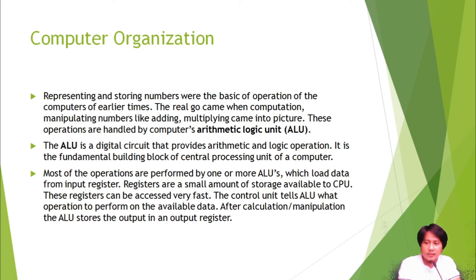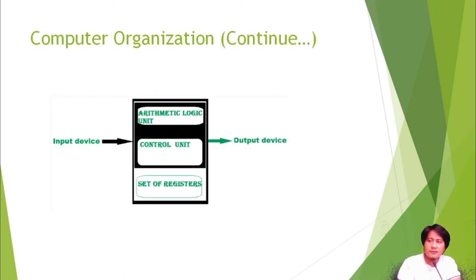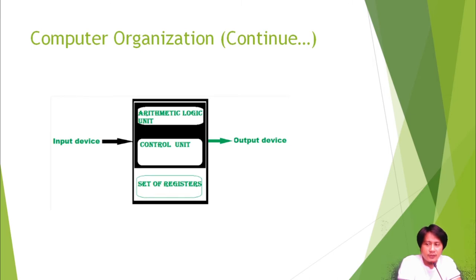The control unit tells the ALU what operation to perform on the available data, and after calculation or manipulation, the ALU stores the output in an output register. Looking at the diagram, on one side we have the input device, on the other side the output device, and the box in the center is the central processing unit, which has three components: the arithmetic logic unit, the control unit, and the set of registers.